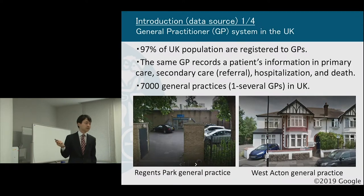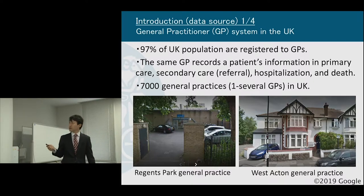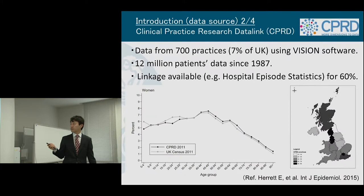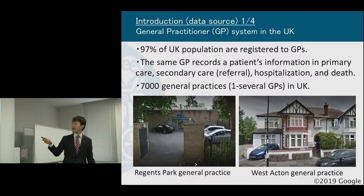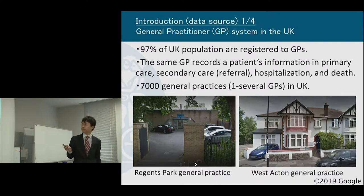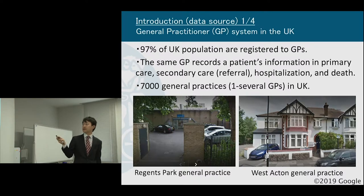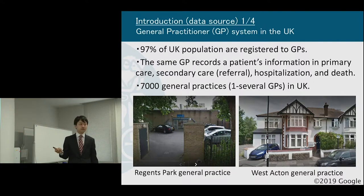For the next few slides, let me briefly introduce what the UK primary care database is. In the UK, there is a primary care gatekeeper system, or GP system, in which almost all people living in the UK are required to be registered with a GP to receive universal healthcare for free. By this system, the same GP records a patient's information in primary care, secondary care — meaning referral or specialist consultation — hospitalization, and death. In theory, a patient can be followed up continuously throughout his or her life.